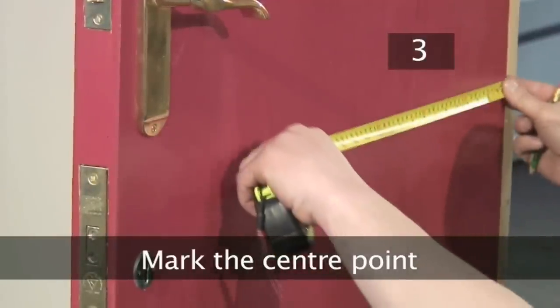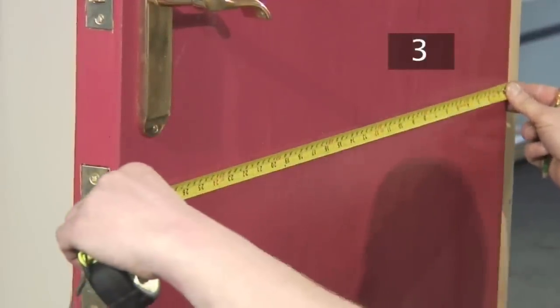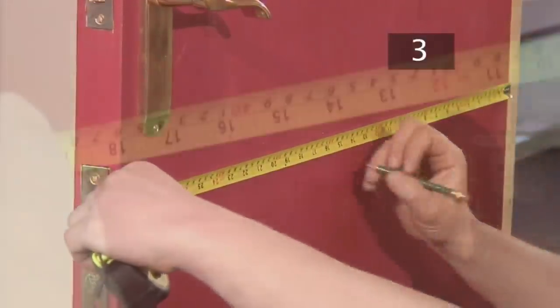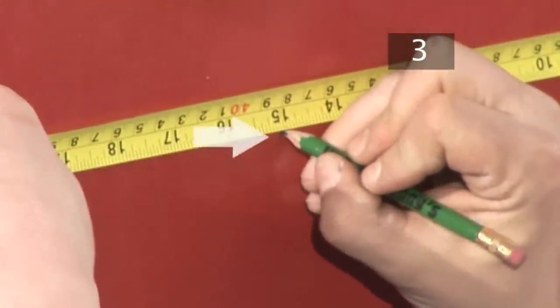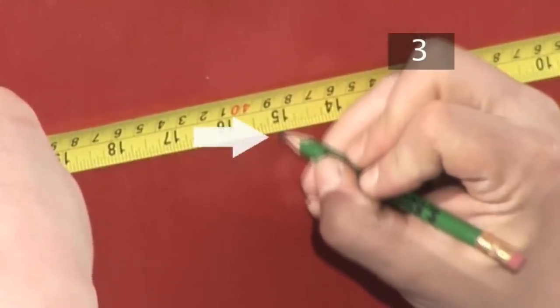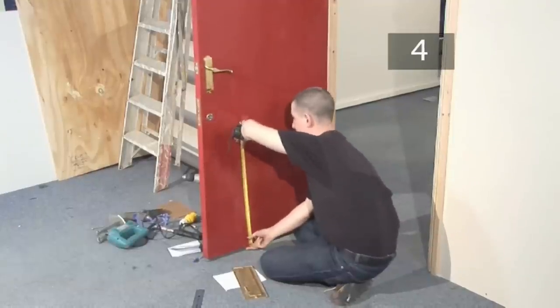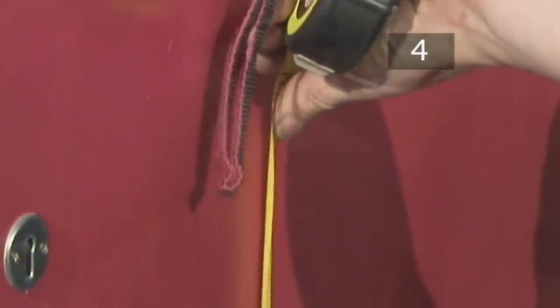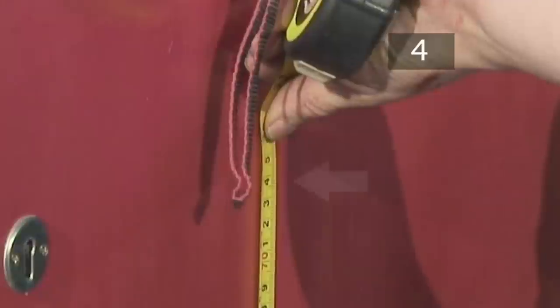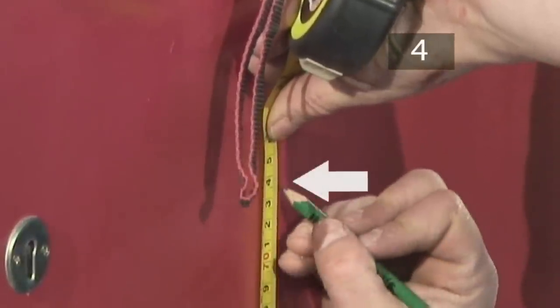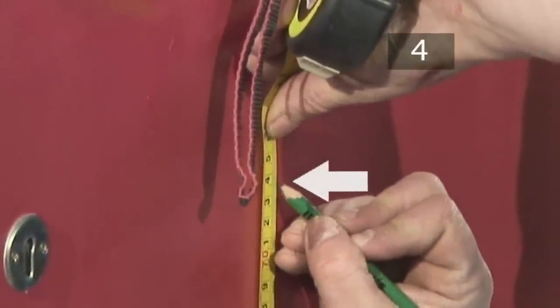Step 3. Mark the center point. Find the center of the door and make a pencil mark at the height you have chosen. Step 4. Mark the height. To ensure that the letterbox is level, measure and mark the chosen height of the letterbox to the left and right of the center point.